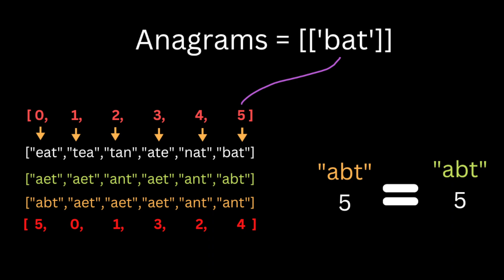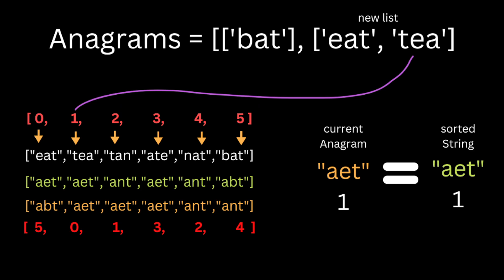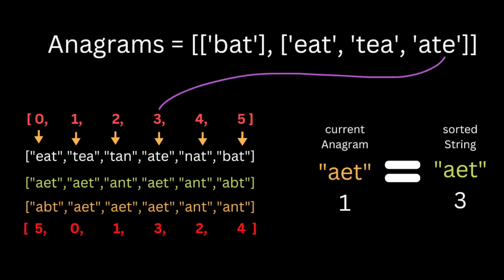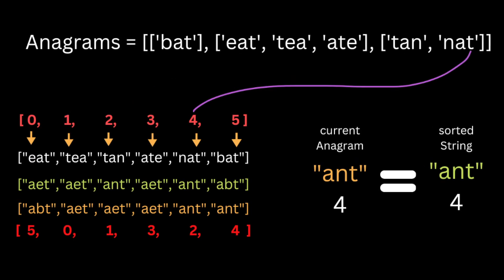After sorting the letters inside each word, each sorted word holds its original index. So 'abt' holds index five since 'bat' was at index five. Now we iterate through the array of indices. At the first index we see 'abt', so we create a new group of anagrams and add the original word 'bat'. Moving on, at index zero the sorted anagram is 'aet', and the original word at index zero is 'eat', so we add it to that anagram group.